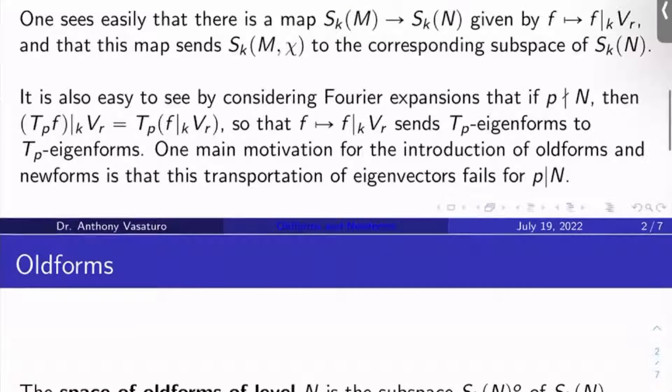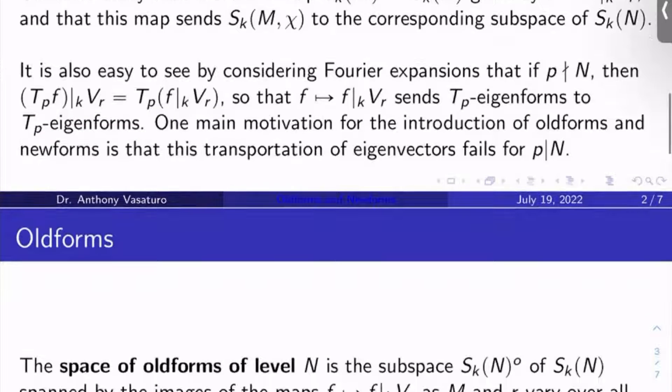It's also easy to check by just looking at Fourier expansions that if P doesn't divide N, then T_P of f bar K V_r is T_P of f bar K V_r. In particular, the map that I gave you that sends f to f bar K V_r sends T_P eigenforms to T_P eigenforms. One main motivation for introducing old forms and new forms is that this transportation of T_P eigenforms under this map fails if P divides N.